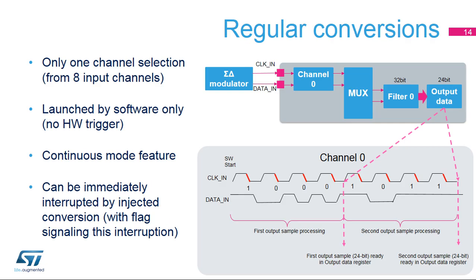Regular conversions have lower priority and can be interrupted by an injected conversion. If interrupted, the regular conversion is restarted once the injected conversion finishes, and this interruption is indicated by a flag. Regular conversions can only be launched by software, with no scan mode available, but can run in continuous mode without channel switching and in fast mode without filter refill. They are used for measurements where timing is not critical, such as temperature or slow signals, or for continuous conversions from one channel, such as audio or energy measurement.